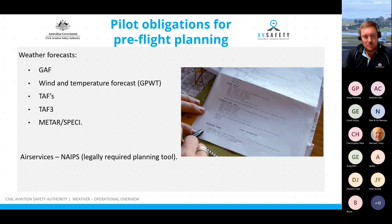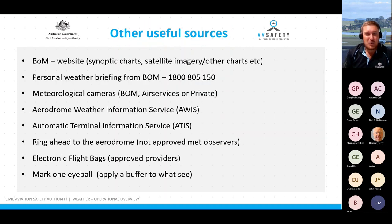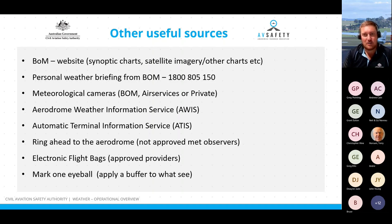The legally required planning tool we must use is on the Airservices website, NAIPS, but you can also gain awareness through other tools. A webcam at an airfield will provide an actual picture of the current status of the airport, but remember it's pointing in a particular direction. If you ring ahead, treat the information with caution as it may not be totally accurate. The AWIS and ATIS are really good awareness tools for pilots and the frequencies can be found in the ERSA.